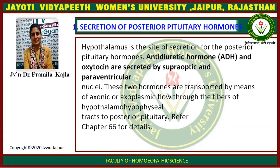The first function of the hypothalamus is secretion of posterior pituitary hormones. The hypothalamus is the site of secretion for ADH and oxytocin, which are secreted by the supra-optic and paraventricular nuclei. These two hormones are transported by axonal and axoplasmic flow through fibers of the hypothalamo-hypophyseal tract to the posterior pituitary.